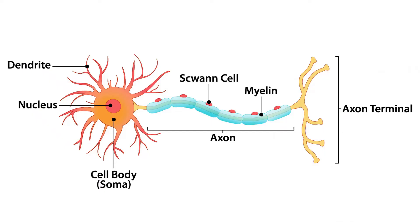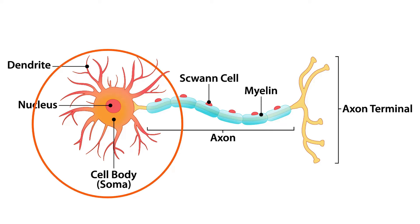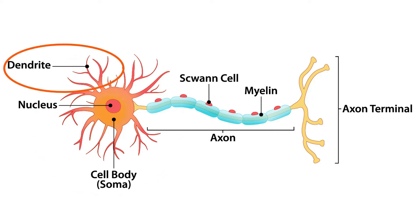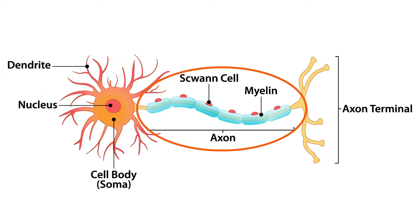The millions of units that make up the nervous system are called nerve cells or neurons. No two neurons are exactly alike; however, they all contain three common structures: a cell body that contains a nucleus, fine branching extensions called dendrites that are extensions of the cytoplasm of the cell body, and dendrites receive messages in the form of impulses from other axons and conduct these towards the cell body.